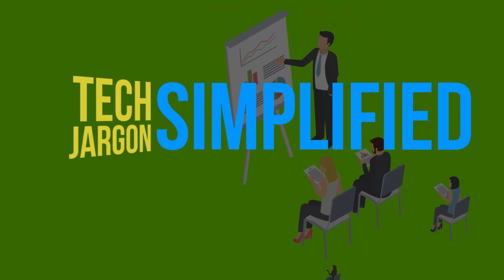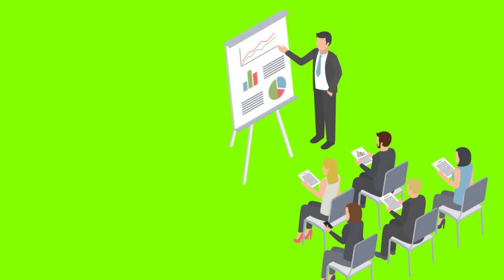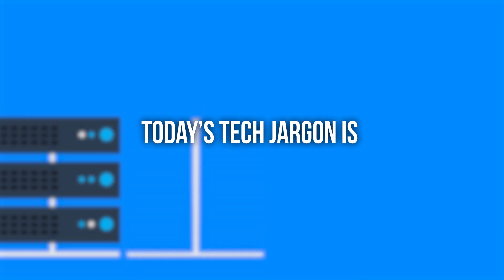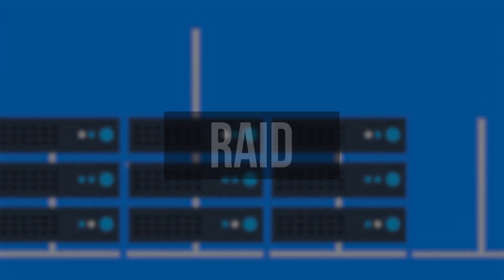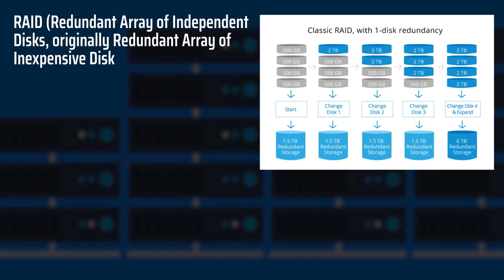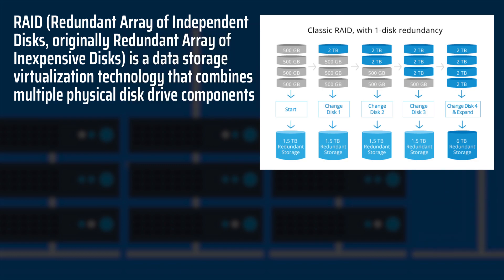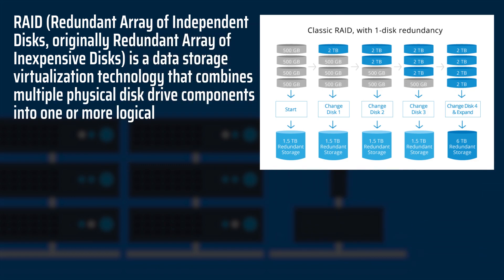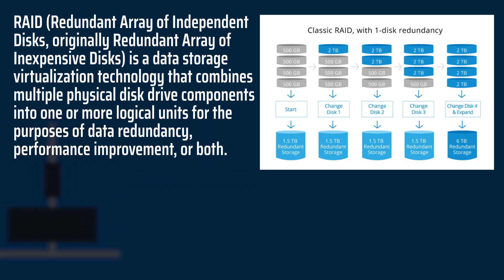Tech Jargon Simplified with Gigabyte. Today's tech jargon is RAID. RAID, Redundant Array of Independent Discs — originally Redundant Array of Inexpensive Disks — is a data storage virtualization technology that combines multiple physical disk drive components into one or more logical units for the purposes of data redundancy, performance improvement, or both.